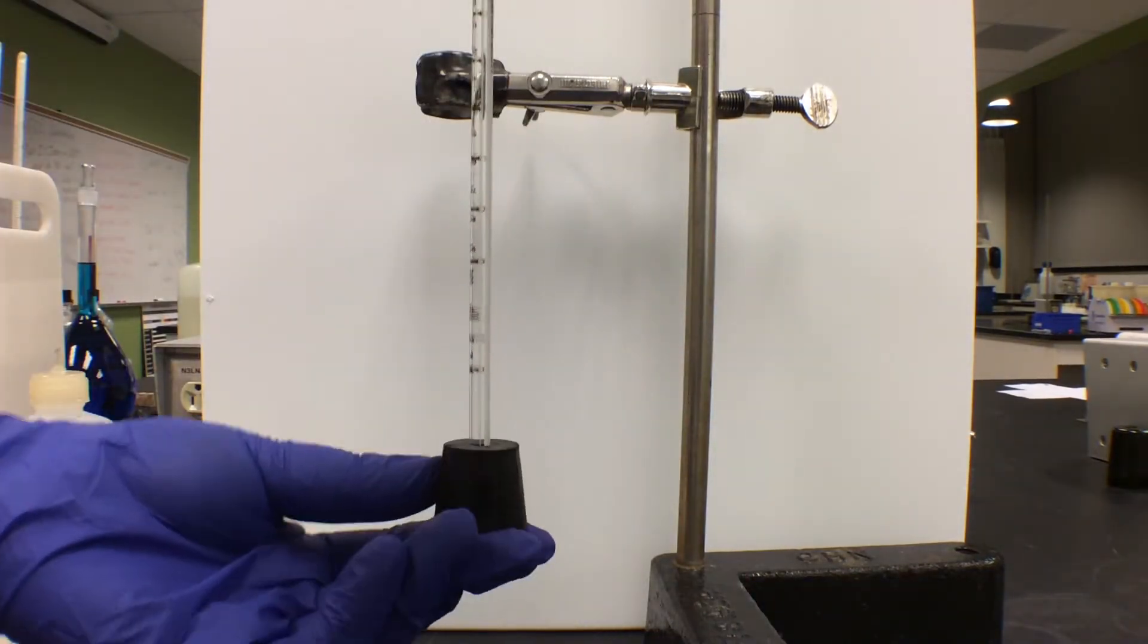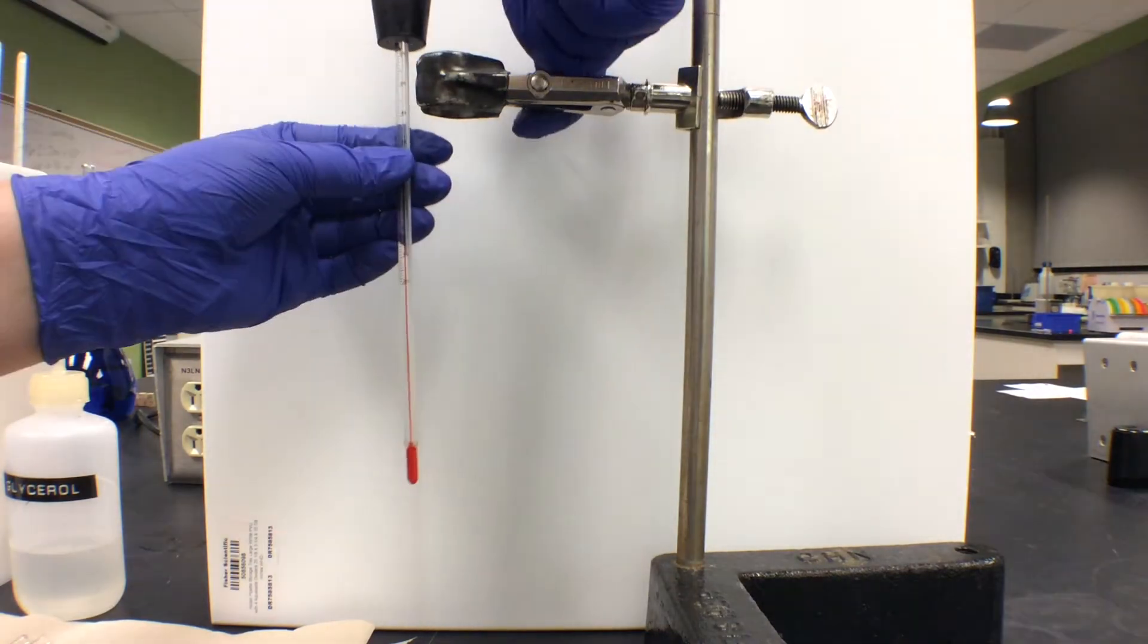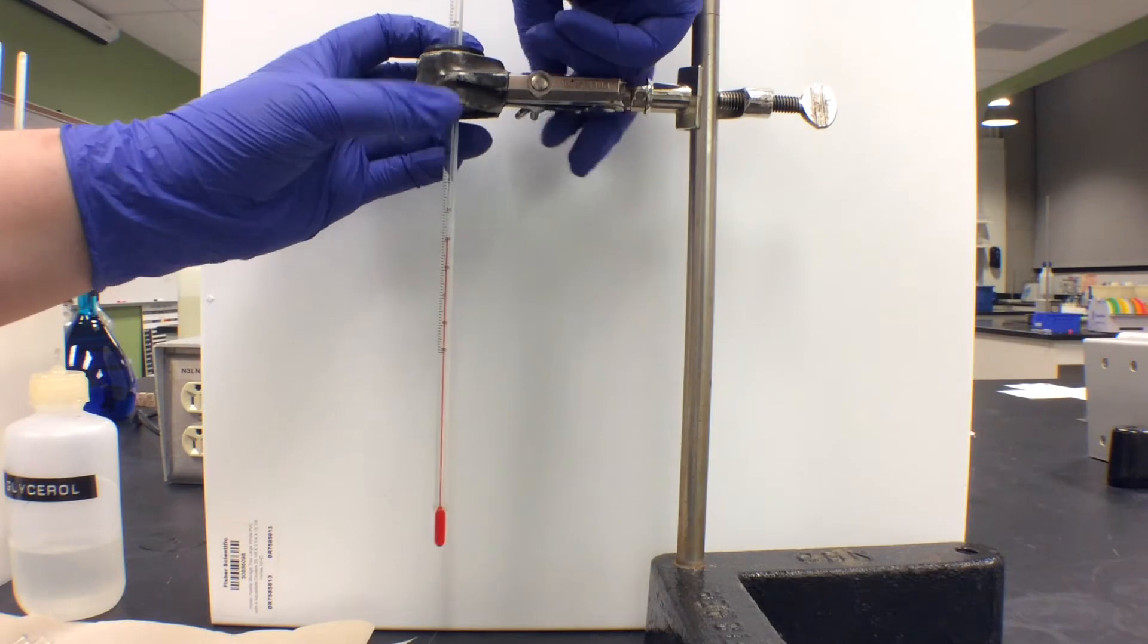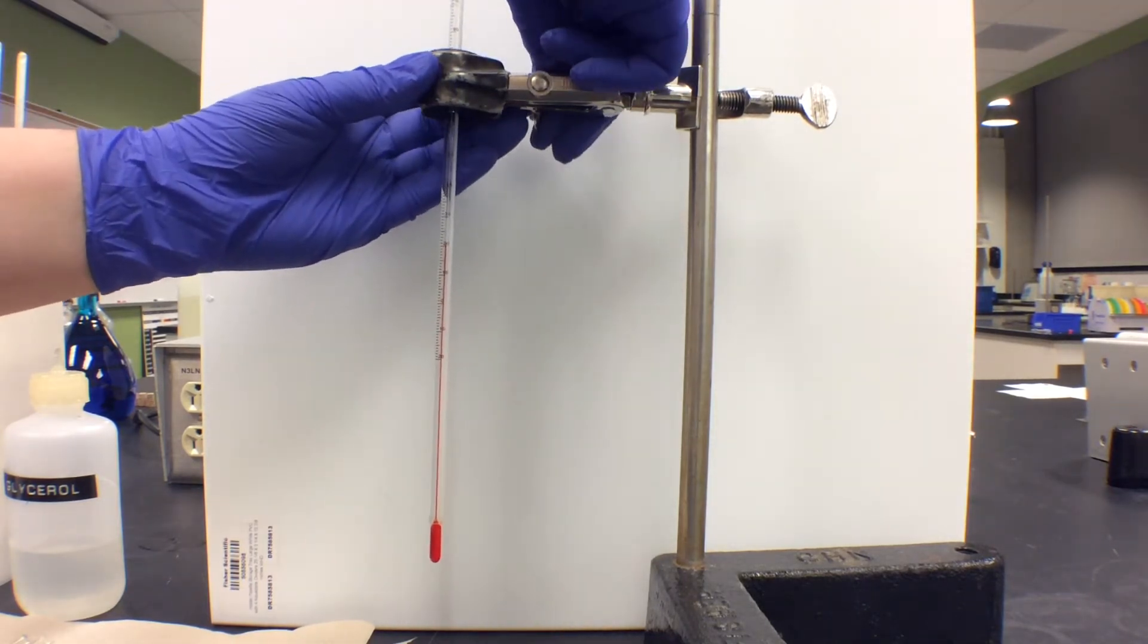After inserting the thermometer, place the stopper in the utility clamp and secure it in place. Don't tighten the clamp too much. The thermometer should be perfectly vertical once the stopper has been secured.